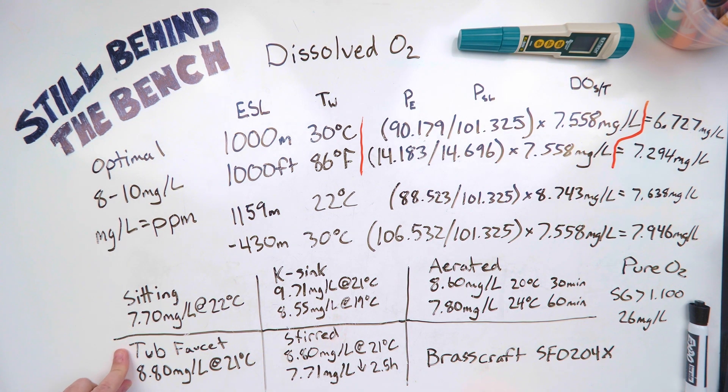So the tub faucet was actually pretty surprising. 8.8 milligrams per liter. It took me a while to get it to come out at like a constant 21 degrees, but I got it. And so yeah, 8.8 milligrams per liter from the tub faucet. And that's the tub faucet doesn't have an aerator on it.